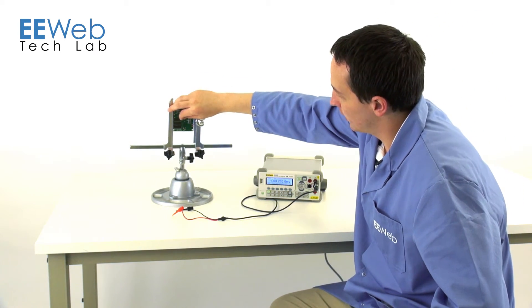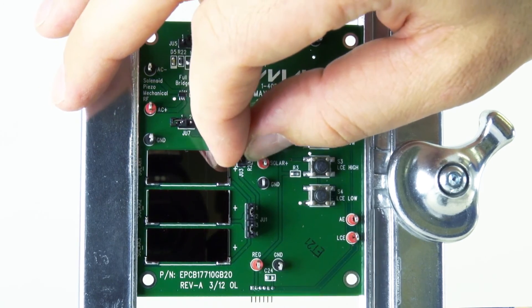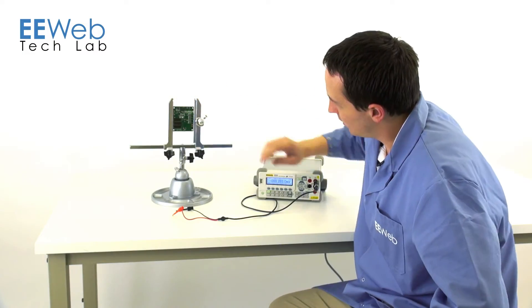Then you go ahead and connect your solar cells to the IC. Now, if you're using a different voltage source, maybe a piezoelectric source,